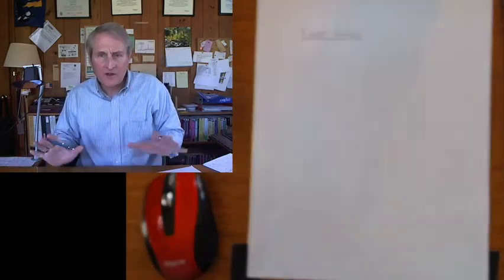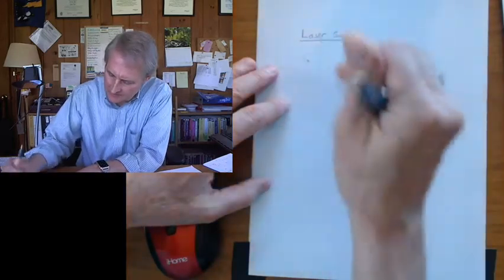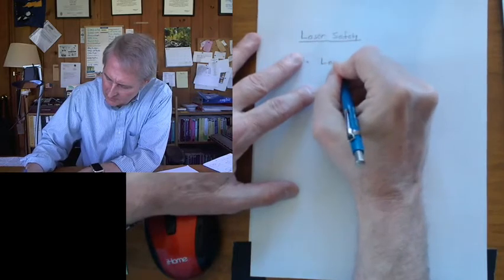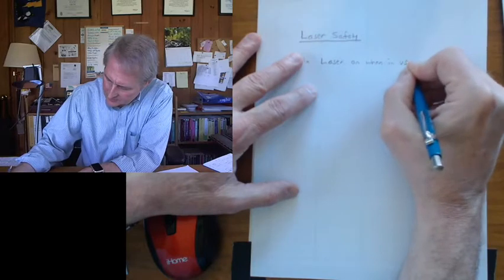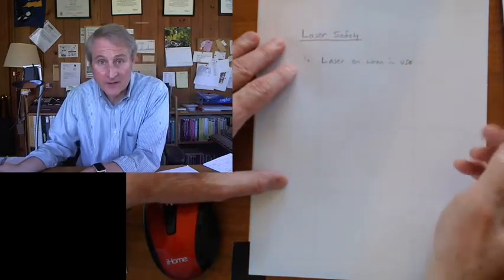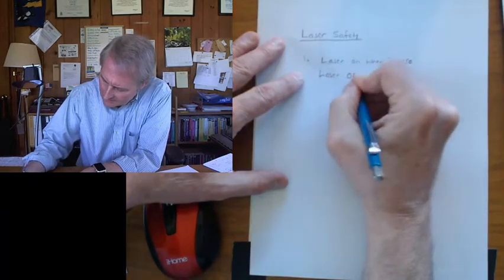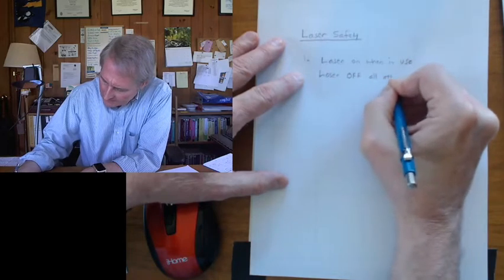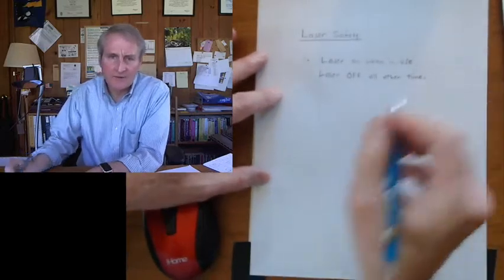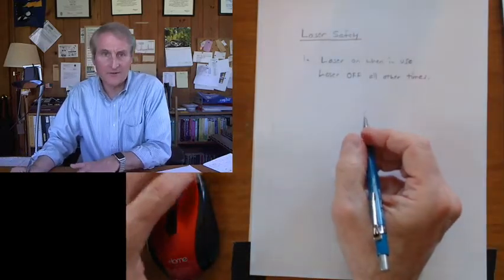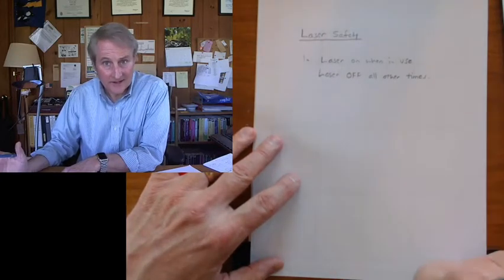First of all, just turn the laser on when you're using it and then turn it off at all other times. I'm doing this the slow way so you can write it in your lab notebook. The idea is that there's no chance of a stray laser beam going into your eye if the laser isn't turned on. You only have the laser turned on when you're using it, and then you turn the laser off.